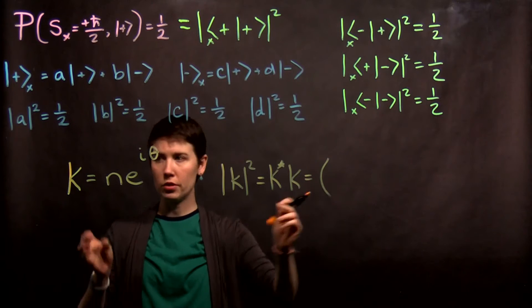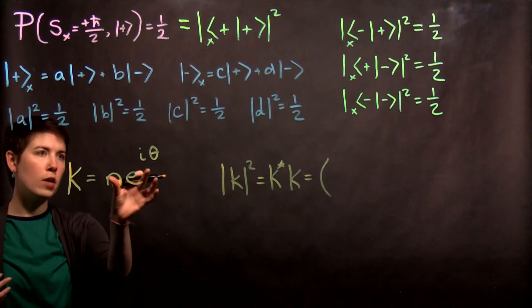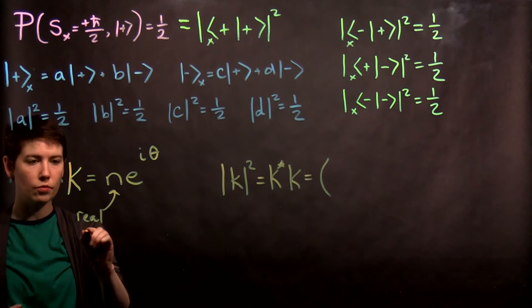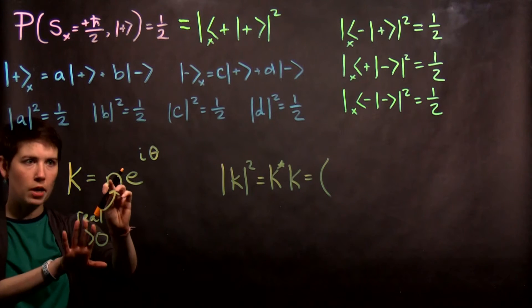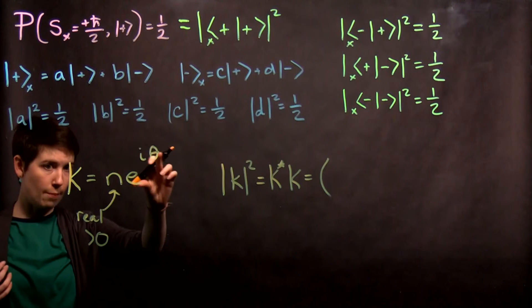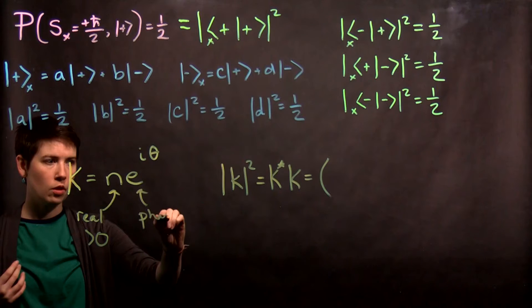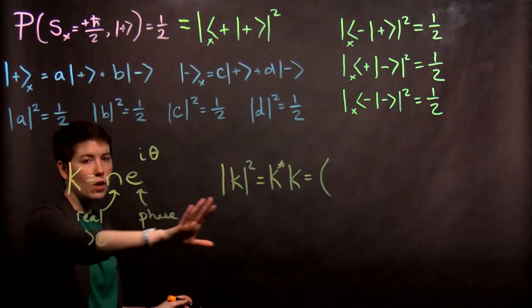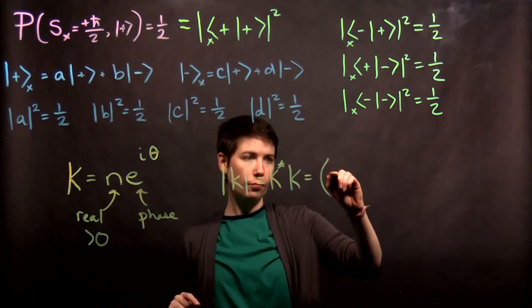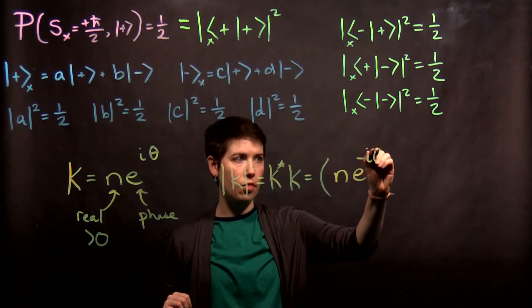So, the first thing I'm going to do is take my k and complex conjugate it. Now, if I've written it this way, I can say that n is going to be a real positive number. So, it's real and positive because the phase, the extent to which it's negative or imaginary, is captured in this number. So, we're effectively calling this the phase. And so, if I assume that this is true, that it takes this form, k star is going to be n e to the negative i theta.